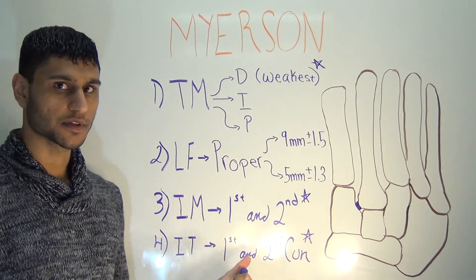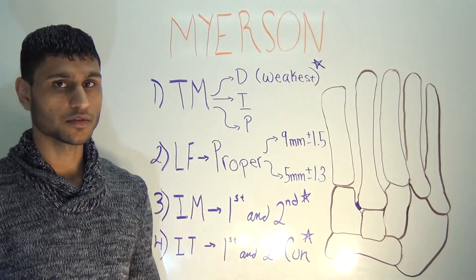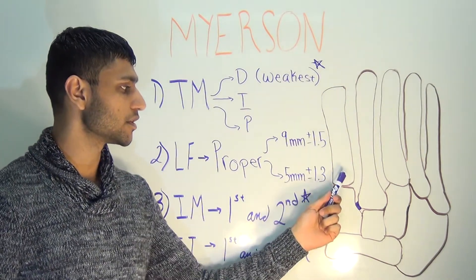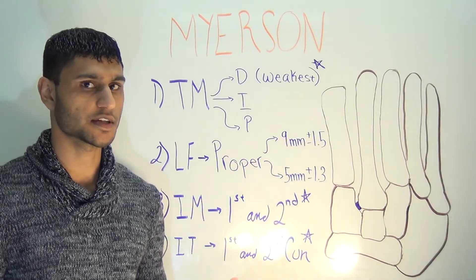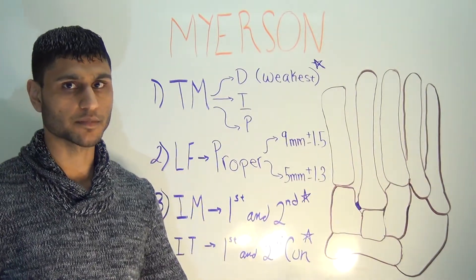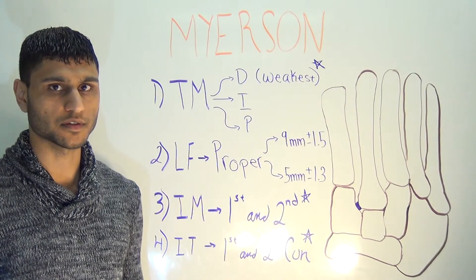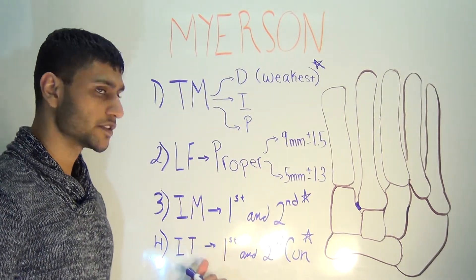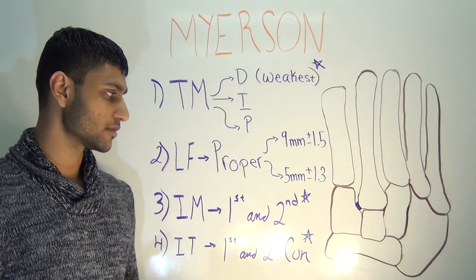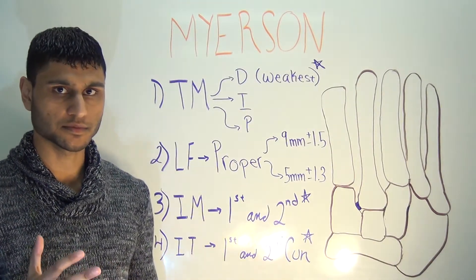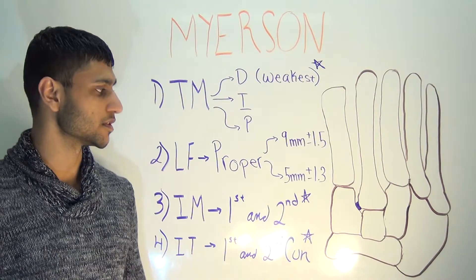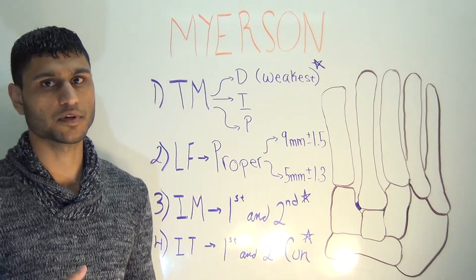For the inter-metatarsal ligaments, which connect the bases of all the metatarsals, the most important anatomical concept is that there is no inter-metatarsal ligament connecting the bases of the first and second metatarsals. However, the lesser metatarsals are connected by inter-metatarsal ligaments. For the intertarsal ligaments, those connect the cuneiforms and the cuboid. Depending on the mechanism of injury, there can be a separation between the first and second cuneiform, which we'll come back to when discussing radiographic findings.